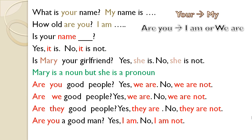Is Mary your girlfriend? You could also say: Is she your girlfriend? But when you ask someone for the first time, you would probably use the actual person's name — Mary. Is Mary your girlfriend? Yes, she is. No, she is not. Are you/they/we good people? Yes, we are good people. Yes, they are good people. Or: No, we are not good people. No, they are not good people.